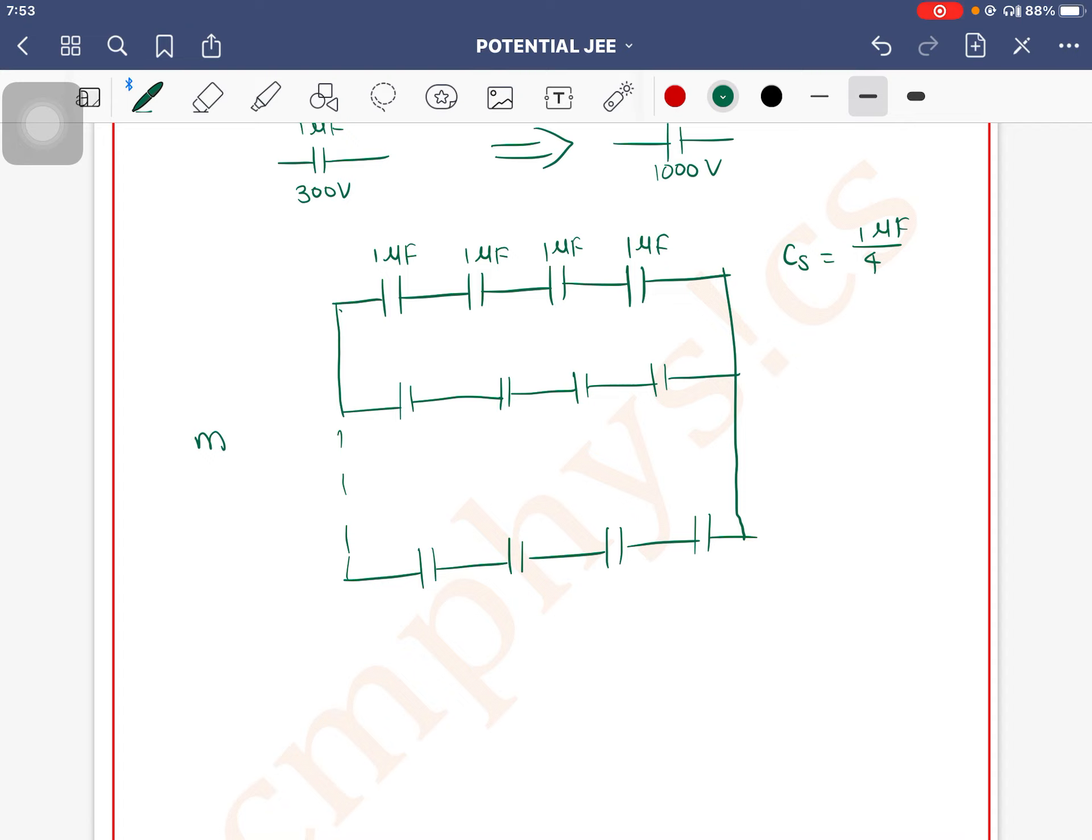The final capacitance for capacitors in parallel is C_parallel equals m times c. So C_parallel equals 2 microfarad equals m times 1/4 microfarad.